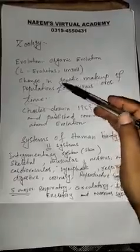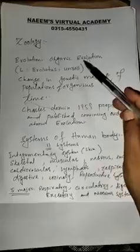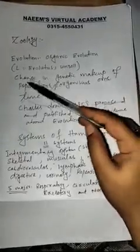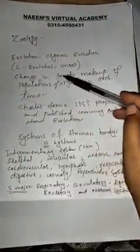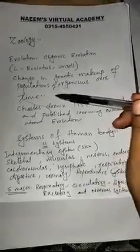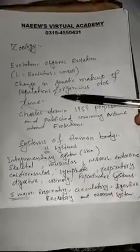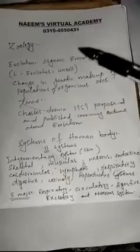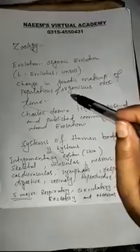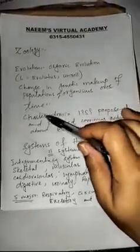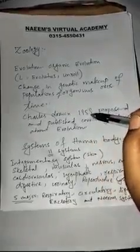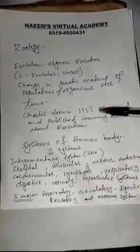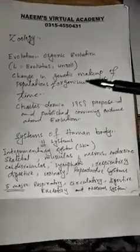What is evolution? Evolution has been taken from a Latin word, evolutus, which means to unroll. We study change in genetic makeup of populations of organisms over time. Thousands of years ago, genetic makeup, chromosomes, and genes in the organism body changed. Charles Darwin, in 1859, proposed and published convincing evidence about evolution. The theory is acceptable.